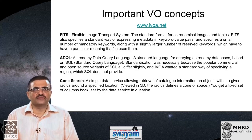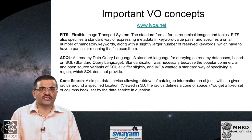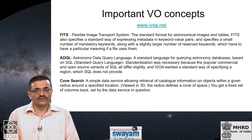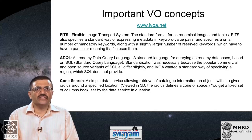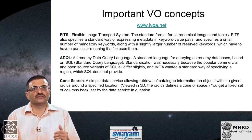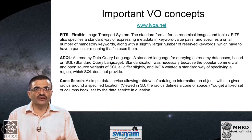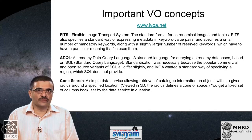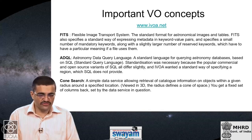There are some important concepts related to the VO which anyone who wants to use archival data for research should be aware of. The first is the FITS data format, which we have already encountered before. It stands for the Flexible Image Transport System and is the standard format for astronomical images and tables. It provides a standard way of expressing metadata — descriptions of the data — as keyword-value pairs, and specifies a small number of mandatory keywords along with reserved keywords that must have a particular meaning if a file uses them.